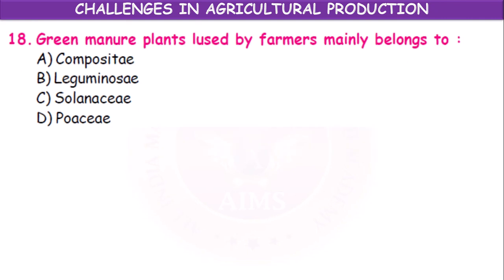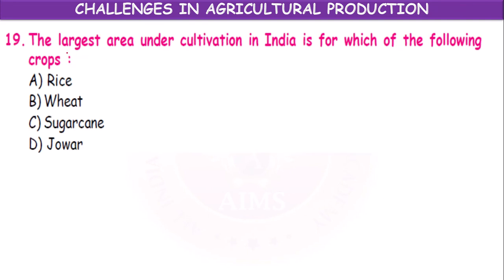Green manure plants used by farmers mainly belong to which family? Most of them belong to the Leguminaceae (Fabaceae) family — nitrogen-fixing bacteria are present in their roots. The largest area under cultivation in India is for rice. India is number one in the production of rice.